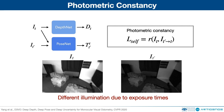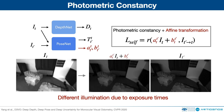Photometric constancy is the core of self-supervised monocular depth estimation networks. However, the assumption is sometimes violated due to different illuminations. We therefore propose to align the illumination conditions of the source and target images and then calculate the photometric residual. To realize it, we let the network predict the affine lighting transformation parameters A and B from PoseNet. We then apply the affine transformation on the intensities of the target image. Note that the two parameters are learned self-supervisedly without the need of ground-truth labels.